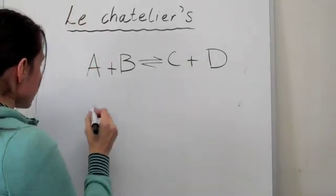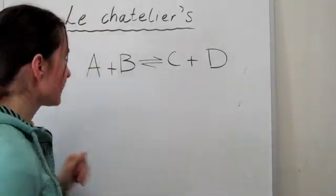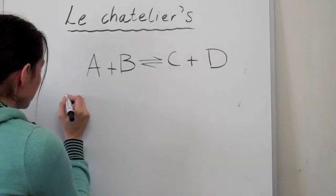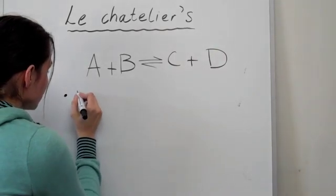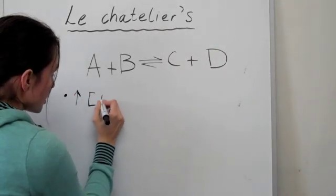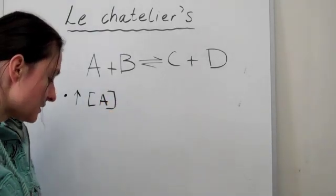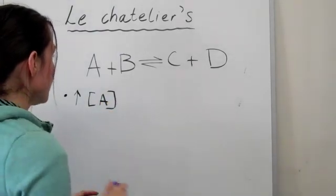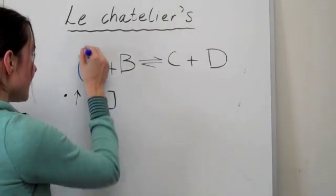So let's have a look at basically what happens. I'll give you an illustration of this. Say in this equation, we decide to increase the amount of concentration of A that we have, and what that is going to do is since we've increased this amount.